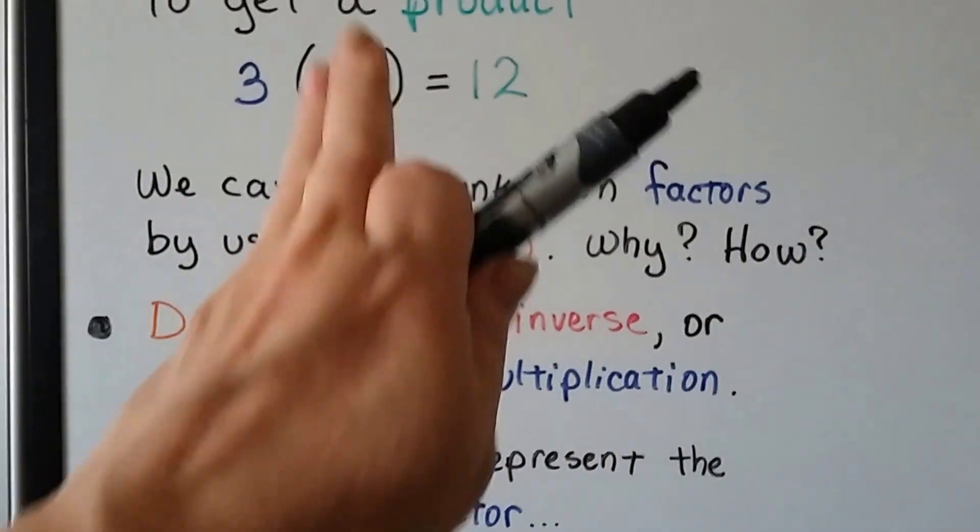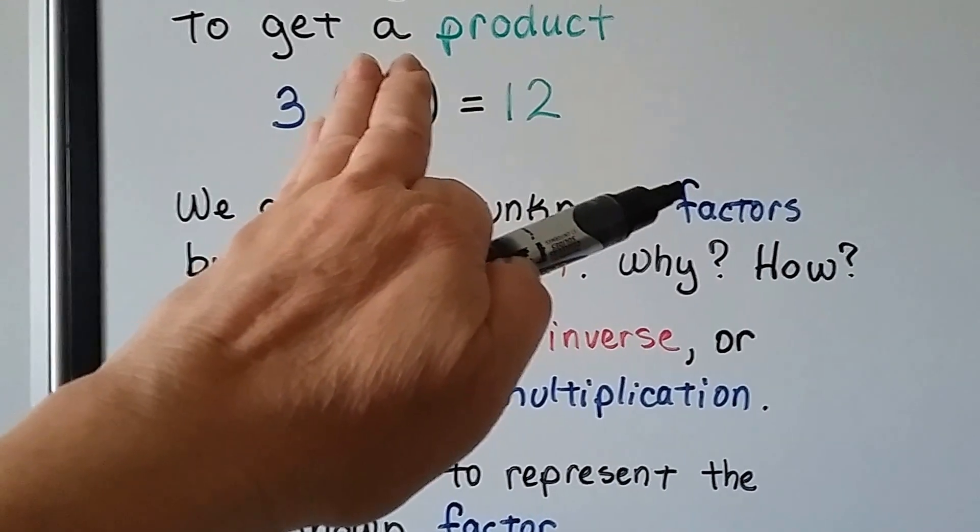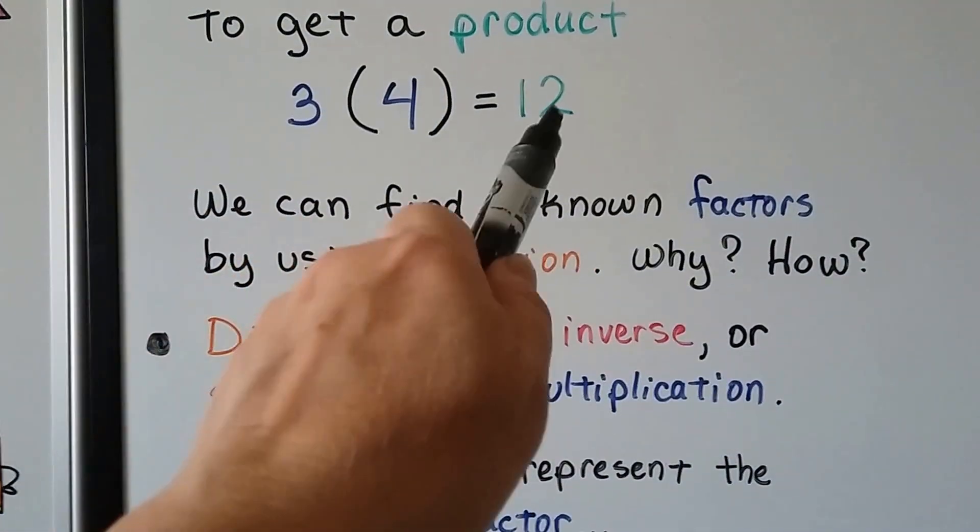So what if instead of the 4, there was an x or an n there, and we needed to figure out what it was, what that value was, to equal the 12?